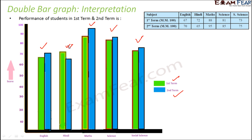Now, which subject shows the maximum improvement in performance? Among English, maths, science, and social science, the improvement is greatest where the difference between the two bars is largest. Comparing the differences: in English, maths, science, and social science, the difference is maximum in the case of maths. Therefore, we can say that the performance has improved the maximum in maths. In this fashion, we can interpret a double bar graph.